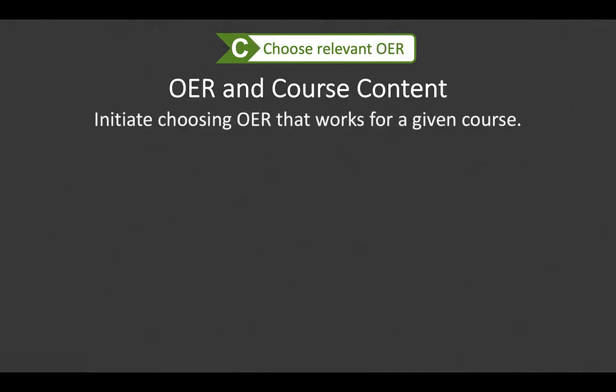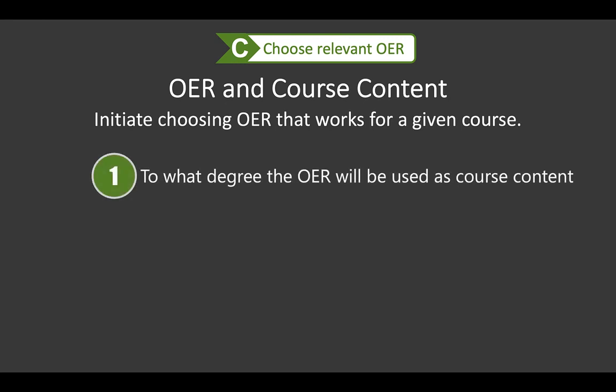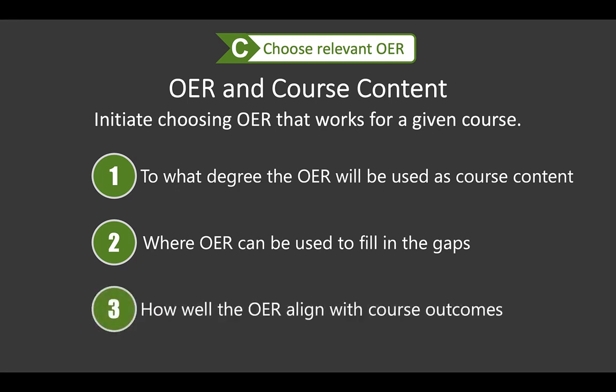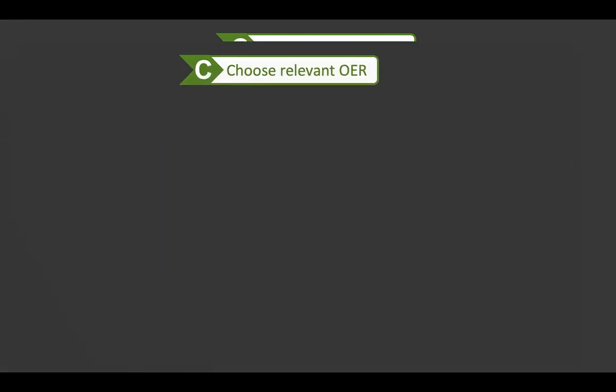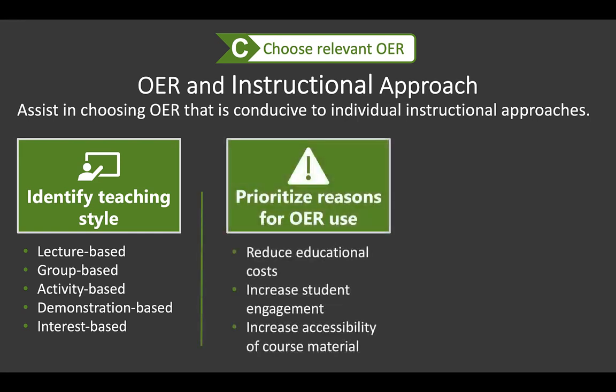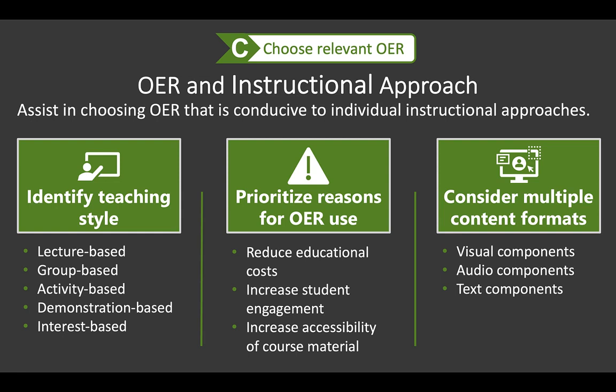When initiating OER selection, those implementing OER should initially determine to what degree OER will be used as course content. Is the current textbook being replaced? Are OER being used to enhance the representation and or diversity of the content? Or are they being used to supplement existing material? Then they should pinpoint gaps in existing content OER can fill, and finally assess how well potential OER align with course outcomes. They should also identify their instructional style, prioritize their reasons for OER use, and consider multiple formats that exist in the current content and what OER offers to diversify it.